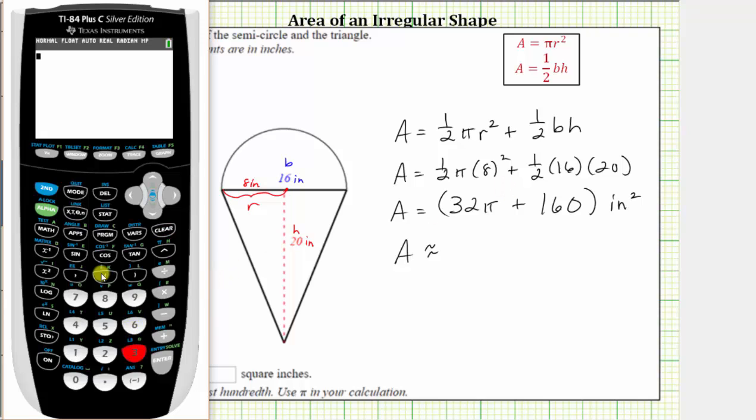We enter 32, and then pi is second then the exponent key, plus 160. Enter.